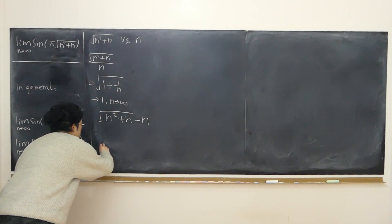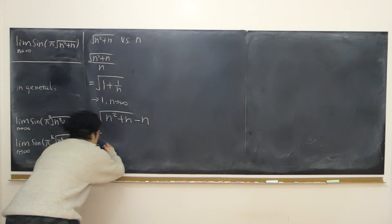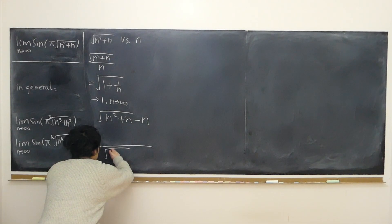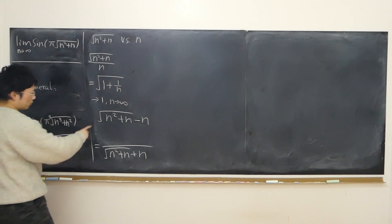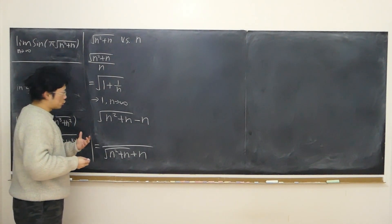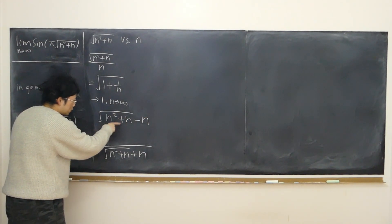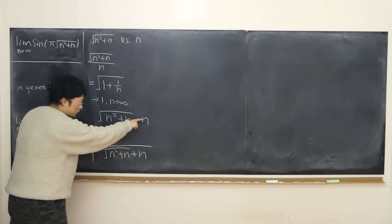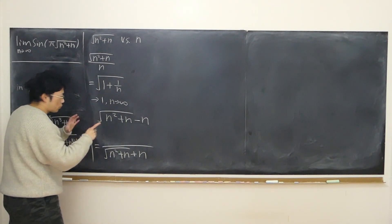What's the square root of n squared plus n minus n? We multiply both top and bottom by its conjugate. The conjugate is changing minus into plus. On the bottom, I have square root of n squared plus n plus n. On the top, when multiplied by its conjugate, we have difference of perfect squares: n squared plus n minus n squared.